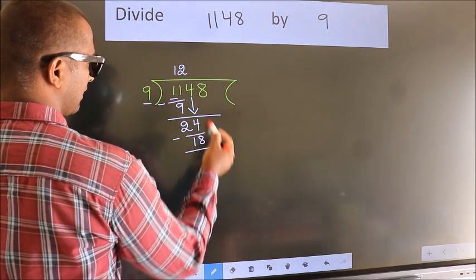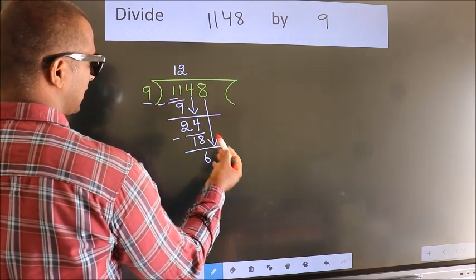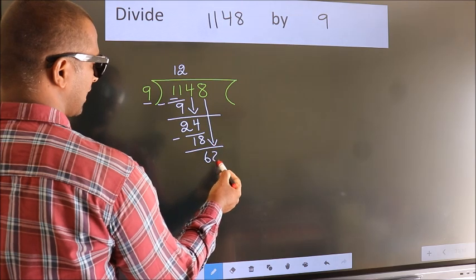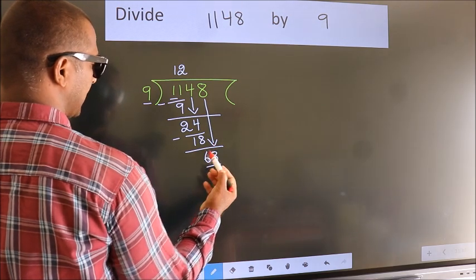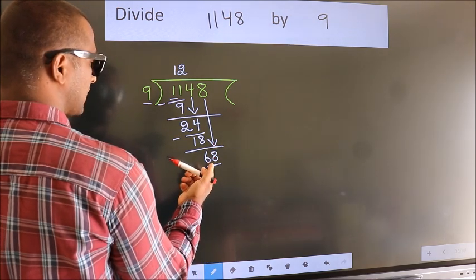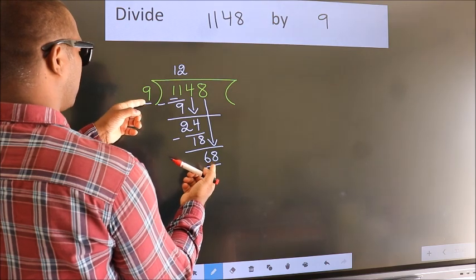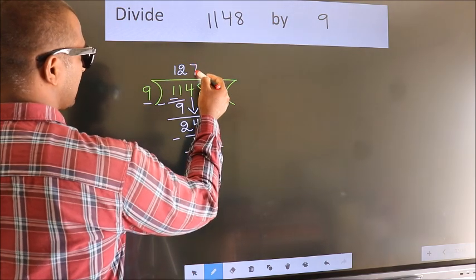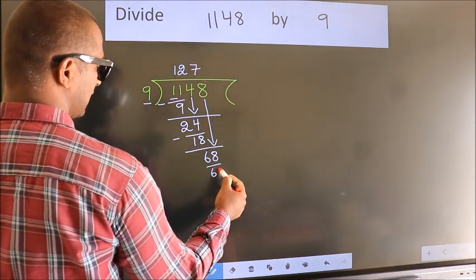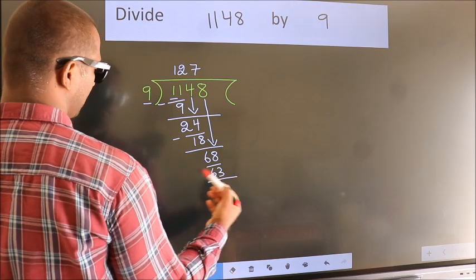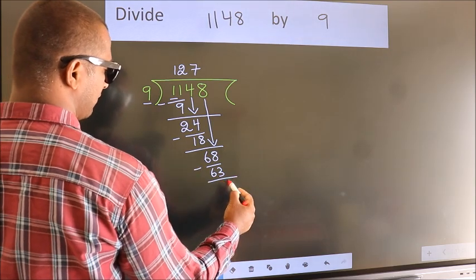After this, bring down the beside number, so 8 down, making 68. A number close to 68 in the 9 table is 9 sevens 63. Now, we subtract. We get 5.